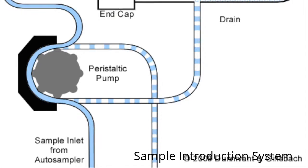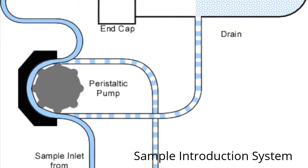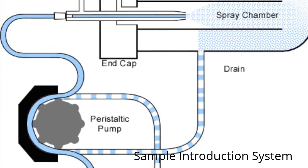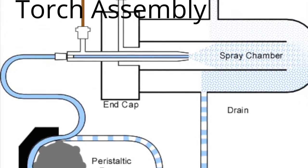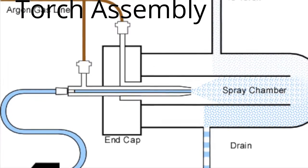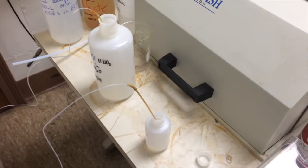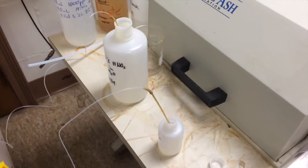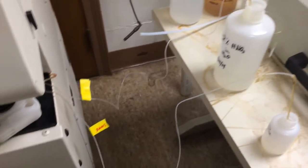Your water sample begins its journey in a part of the instrument known as the sample introduction system. It gets the water sample to the second part, called the torch assembly. The pump continuously takes up small amounts of the water sample through small tubes into something called the nebulizer.